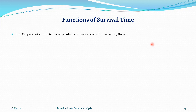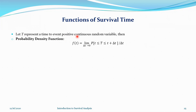We have time T, which is always a continuous positive random variable. For the time being it could be discrete, but right now we are dealing with continuous positive random variables. The probability density function gives you the probability of the occurrence of an event between two specific time points. We have a survival function S(t), which gives you the probability of occurrence of an event beyond the time t.